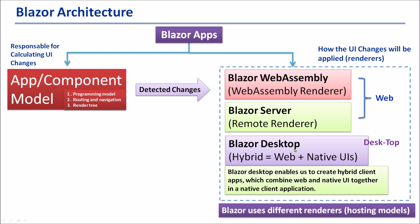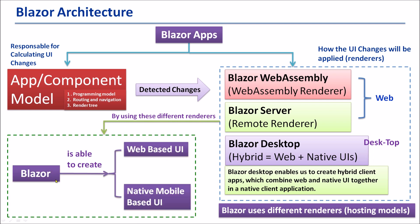Blazor uses different renderers or hosting models. By using these different renderers, Blazor is able to create web-based UI and also native mobile-based UI. This is the most important selling point of Blazor applications. However, Angular, React, and React Native can only create web technology-based UIs.